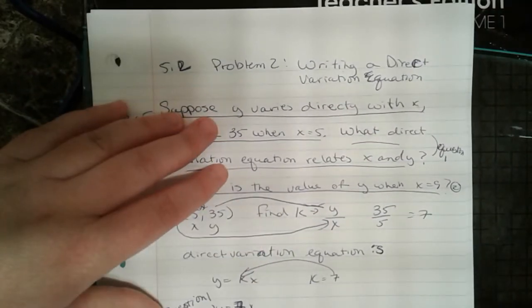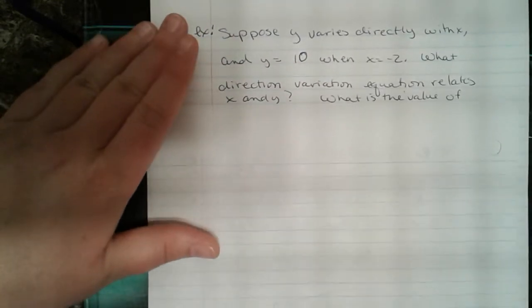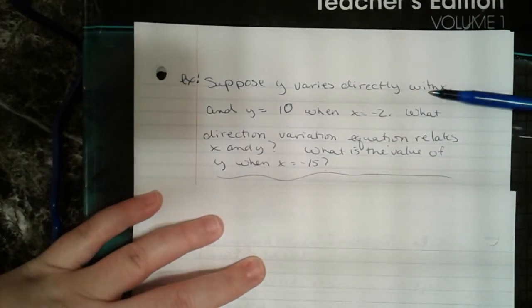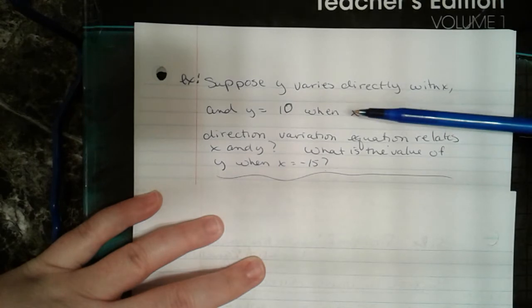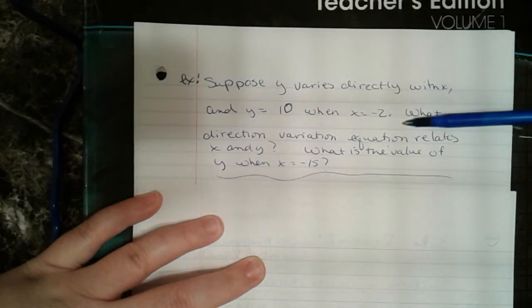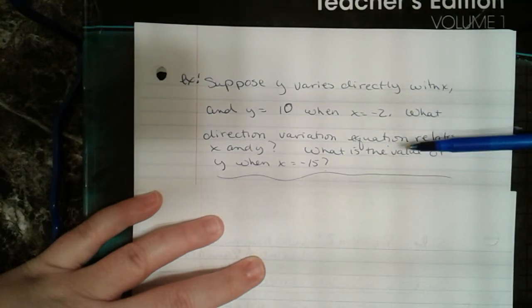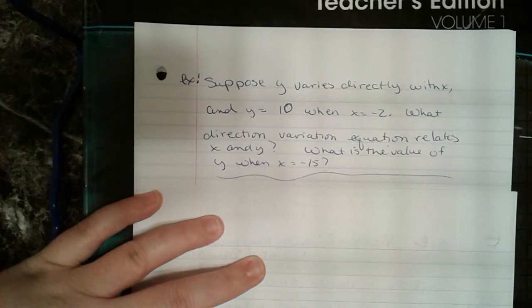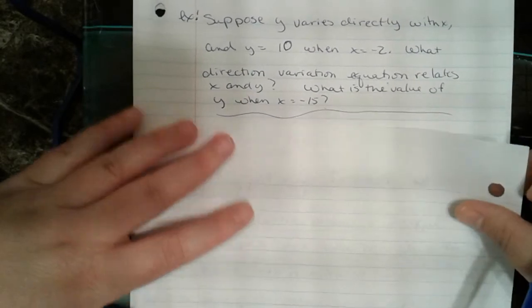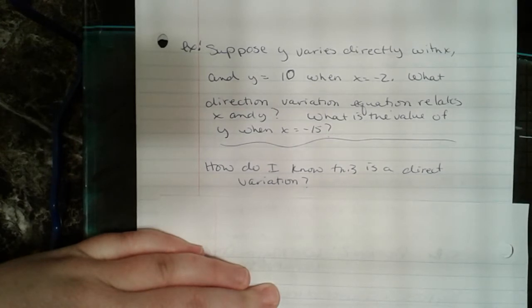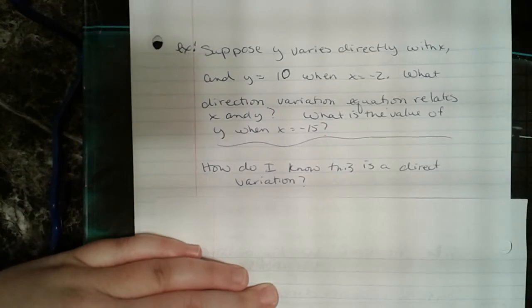Let's do another one. We have: suppose y varies directly with x, and y equals 10 when x is negative 2. What direct variation equation relates x and y? What is the value of y when x equals negative 15? How do I know it's a direct variation?